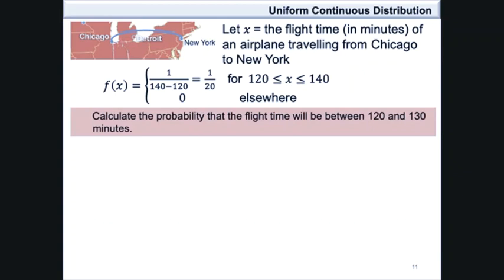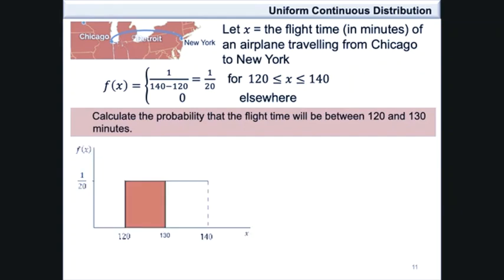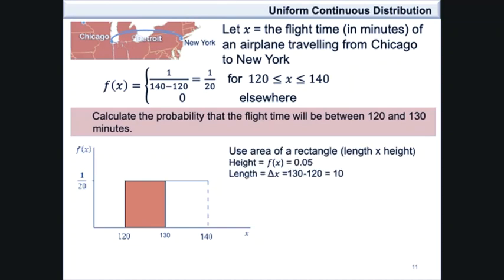Now calculate the probability that the flight time will be between 120 and 130 minutes. The area of interest on the graph is the region shaded between 120 and 130. Since the area under the probability density function is equivalent to a rectangle, we calculate this area by taking the length and multiplying it by the height. The height is 1 over 20, or 0.05, and the length is 130 minus 120, which gives a value of 10.